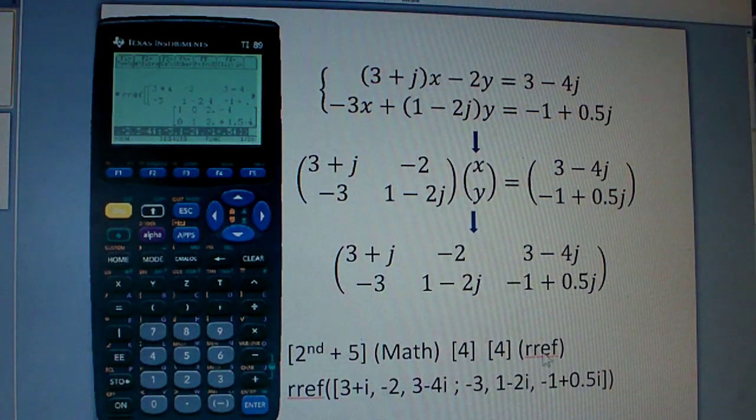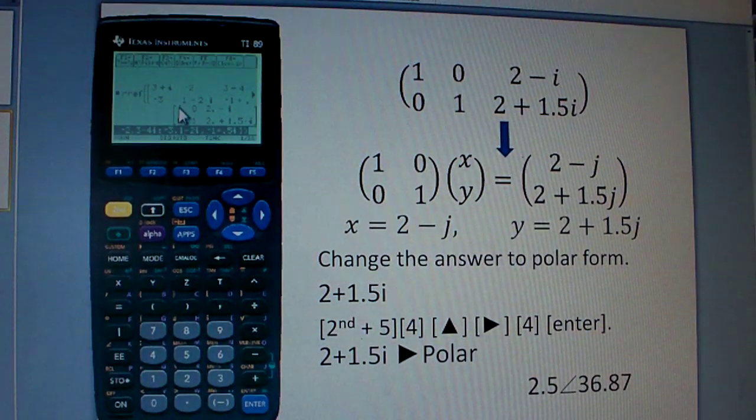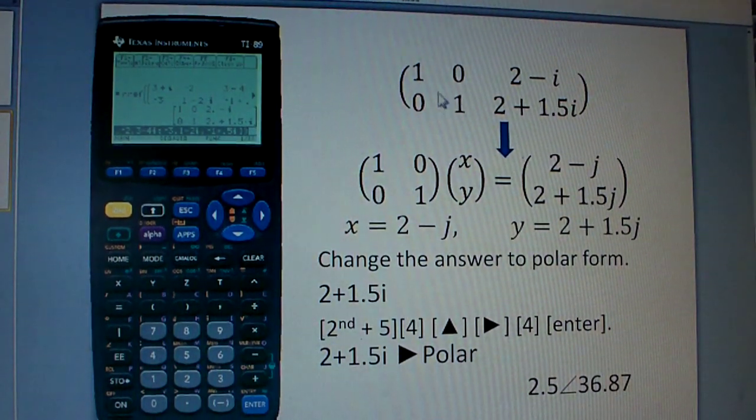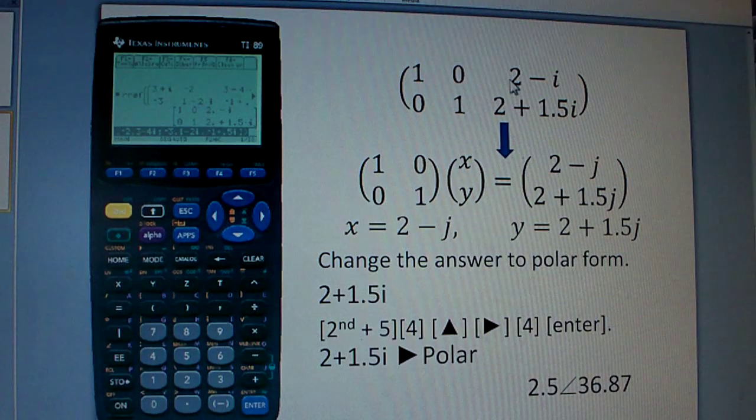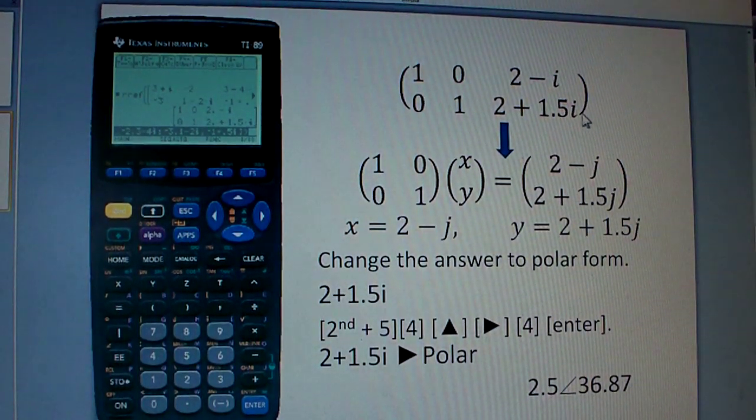Now, what matrix do you get? As you can see, you get this result, which reads like 1, 0, 2 minus I, 0, 1, 2 plus 1.5 I.